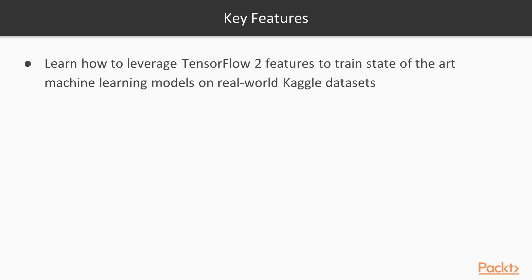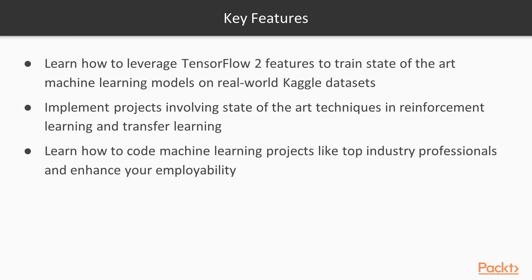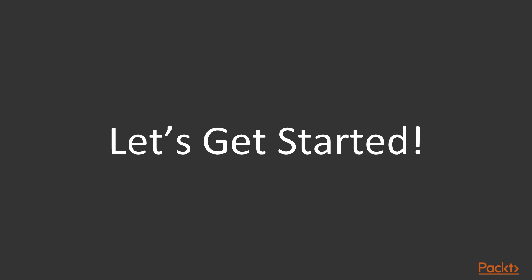Here are a few of the key features of this course. We will learn how to leverage TensorFlow 2 features to train state-of-the-art machine learning models on real-world Kaggle datasets. We will implement projects involving state-of-the-art techniques in areas such as reinforcement learning and transfer learning, which are very hot areas of machine learning research and development. And finally, we will learn how to code machine learning projects like top industry professionals, enhancing our employability and market value. So without further ado, let us get started.